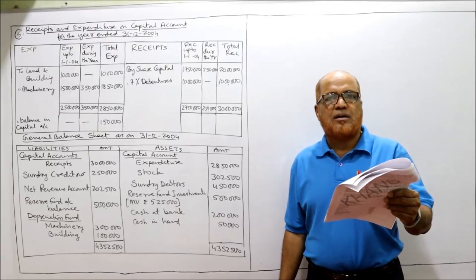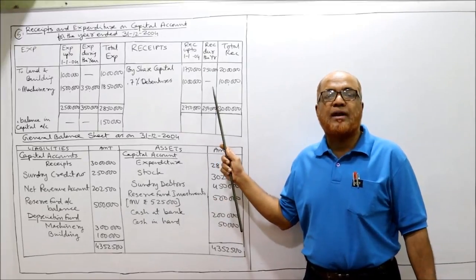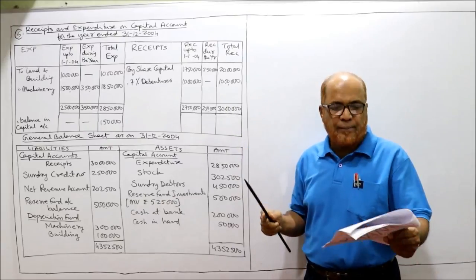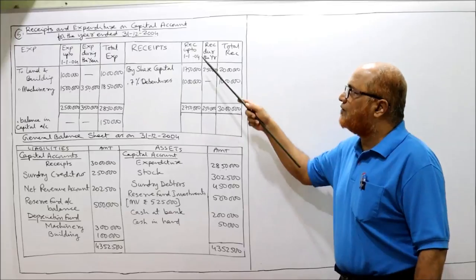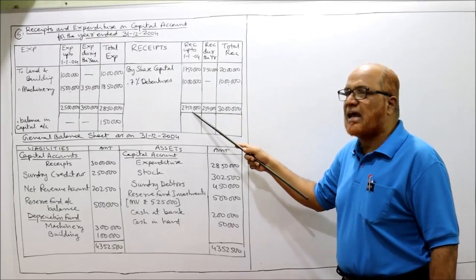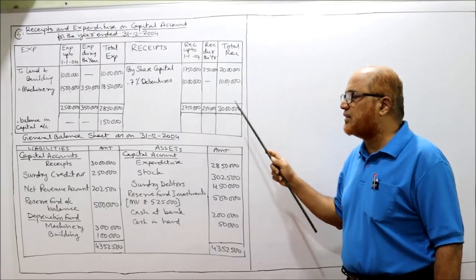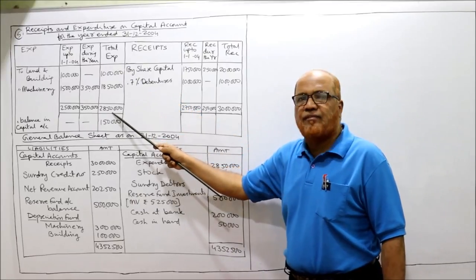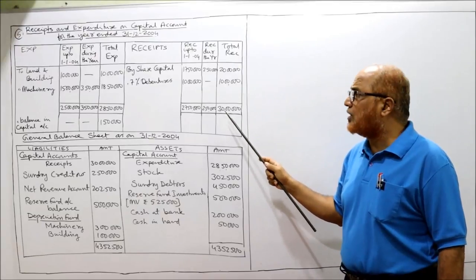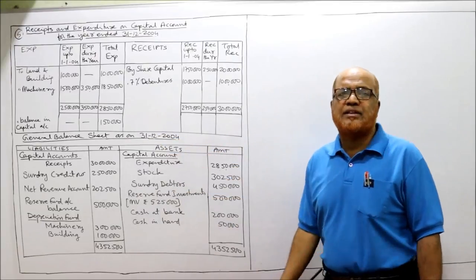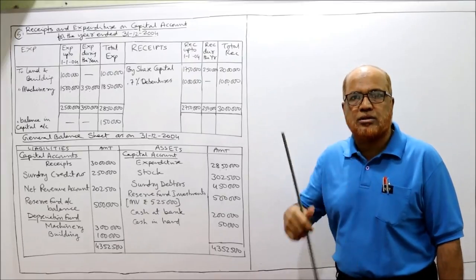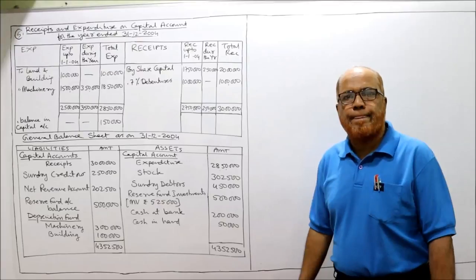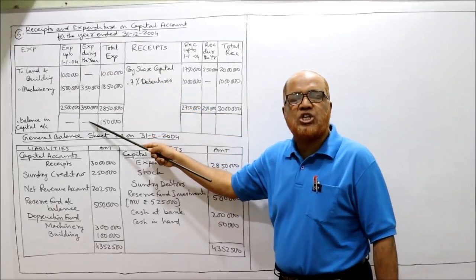7.5% debentures of 10 lakh secured by charge on fixed assets are taken on the receipts side: 10 lakh at the beginning, no debentures issued during the year, total 10 lakh. Total receipts: beginning of year 27 lakh 50 thousand, during the year 2 lakh 50 thousand, total 30 lakh. Capital account is completed. Receipts total 30 lakh, expenditure total 28 lakh 50 thousand; balance in capital account is 1 lakh 50 thousand.